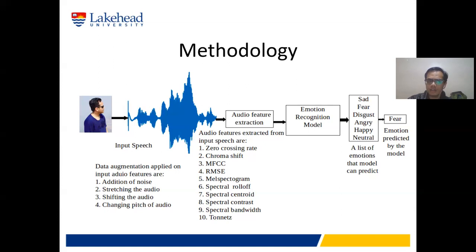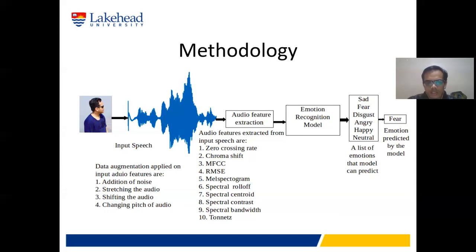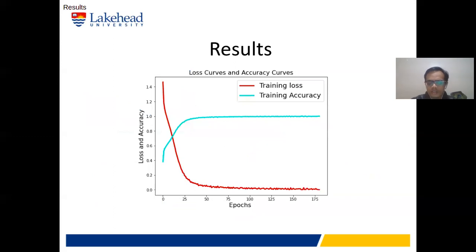We are predicting six emotions for the input audio sample. Once the model is trained, we take a new audio sample, extract its audio features, and pass them to the emotion recognition model. From the list of six emotions, the model predicts one. For example, you can see the waveform of the input audio, the extracted features, and the emotion recognition model predicting the emotion as 'fear.'